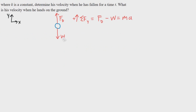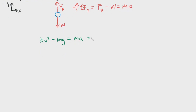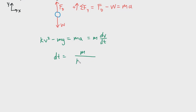From there, I'm going to rewrite this equation in terms of FD, so it becomes KV² minus MG equals MA. We know that A can be rewritten as the derivative of velocity with respect to time, so A equals dV/dt. Now we can rearrange these variables to take the integral, moving the equation so that DT equals M over (KV² minus MG) times DV.